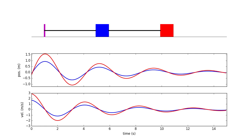Looking back at what we have seen in this video, we can now understand the complex fourth-order behavior of the system as the superposition of two lightly damped second-order modes, with the frequency of the natural response of one mode being a bit more than double that of the other mode.